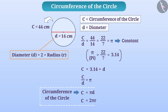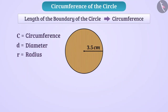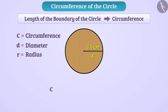This formula is very useful for finding the circumference of a circle. For example, if the radius of a circle is 3.5 cm, then the circumference is C = 2 × (22/7) × 3.5 cm = 22 cm.